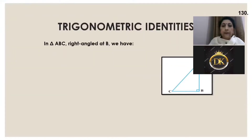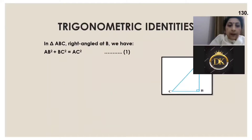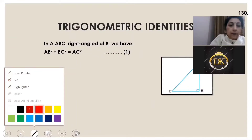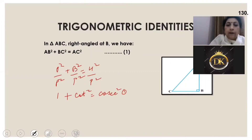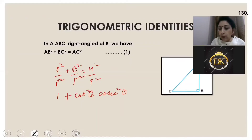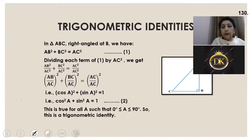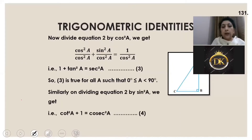Let us take up now the trigonometric identities we had done. If I take a right angle triangle, perpendicular² + base² = hypotenuse². If I divide it by perpendicular square, I get 1 + cot²A = cosec²A. If I divide the whole thing by hypotenuse square, I get sin²θ + cos²θ = 1. And the third identity: 1 + tan²θ = sec²θ. These are the three identities.